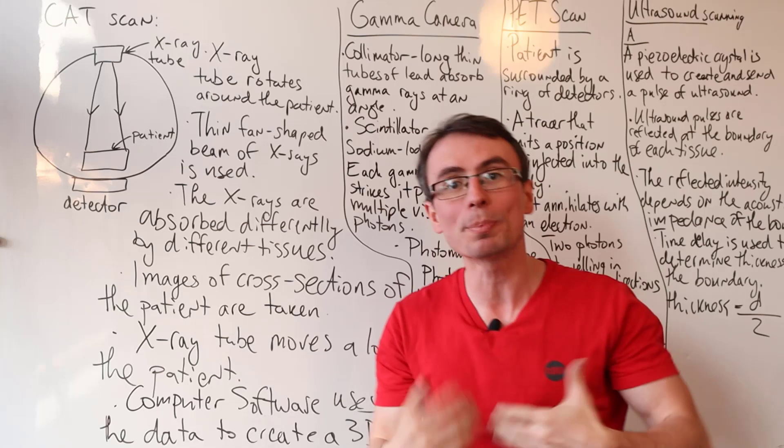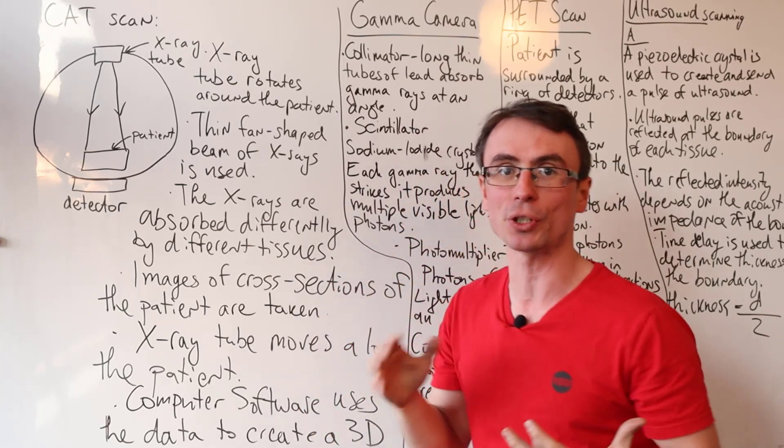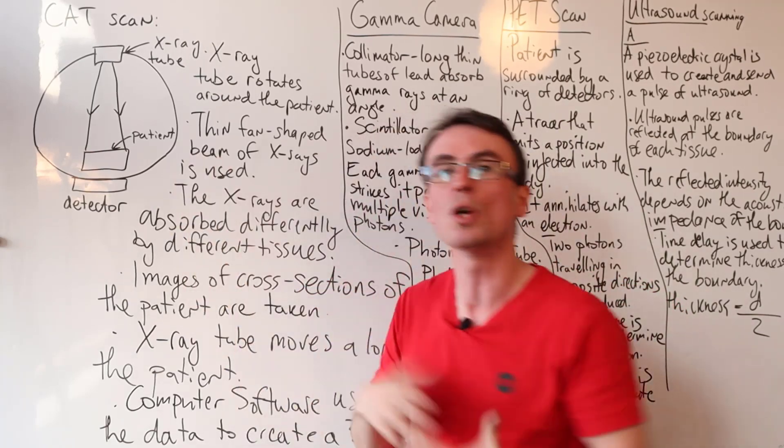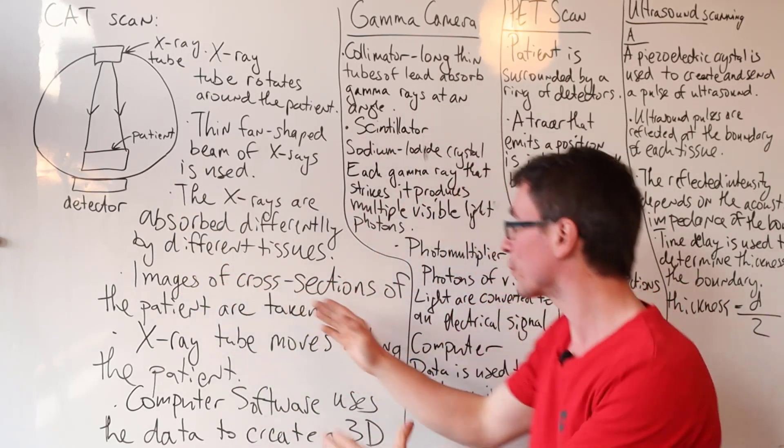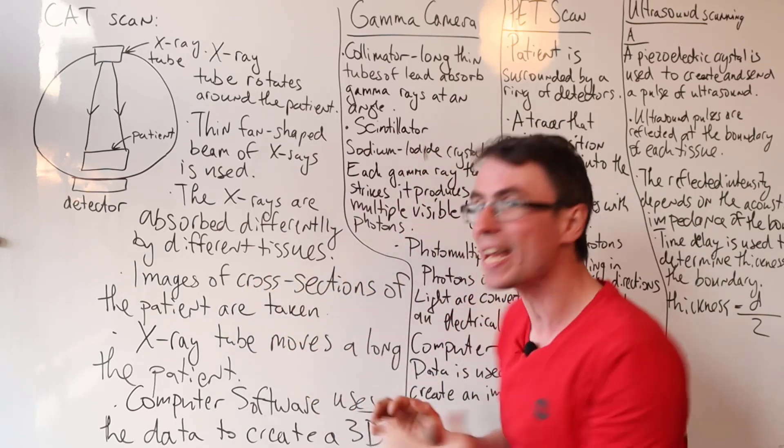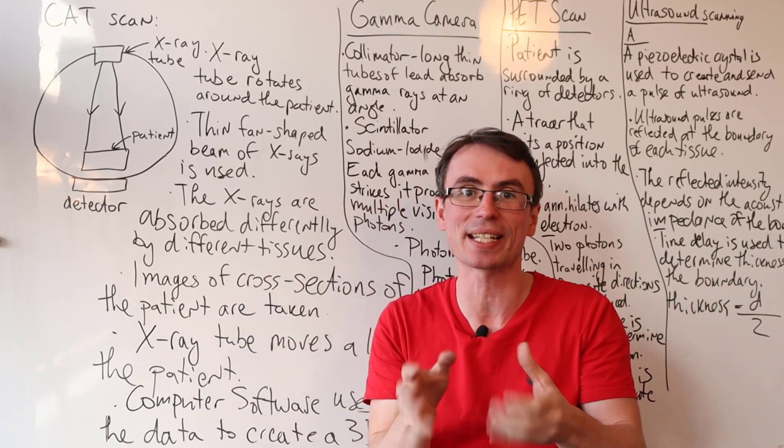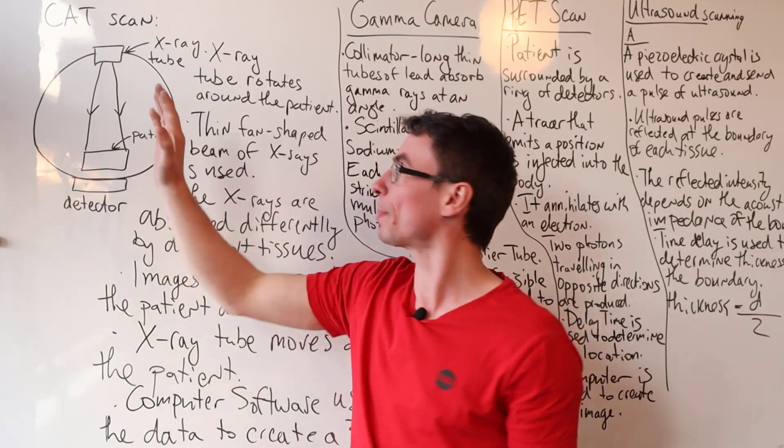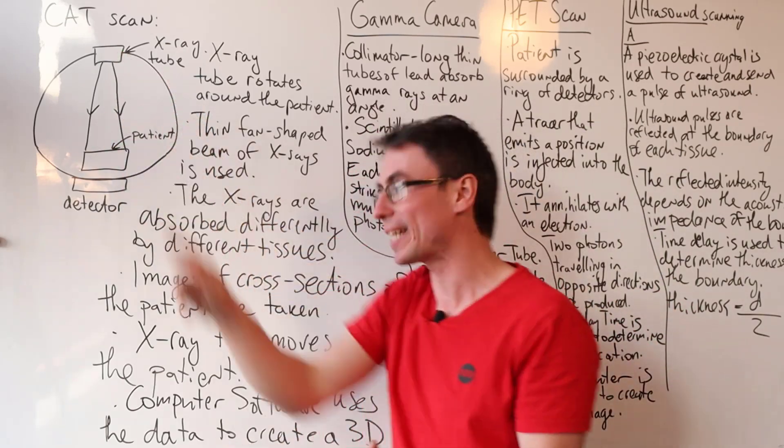The x-rays are going to be absorbed differently by different tissues. For instance, if there's bone here, this will have a different absorption coefficient compared to soft tissue. Images of the cross-section of the patient are actually taken. The x-ray tube will then move along the patient. So in this case, this will be in and out of the board.